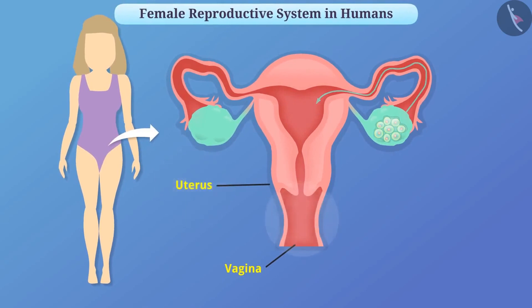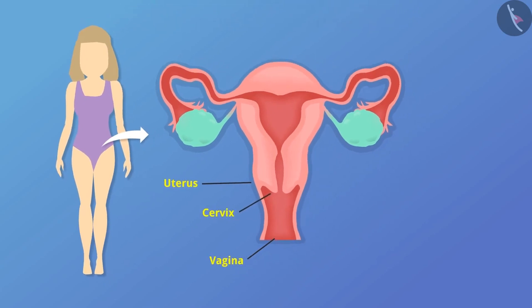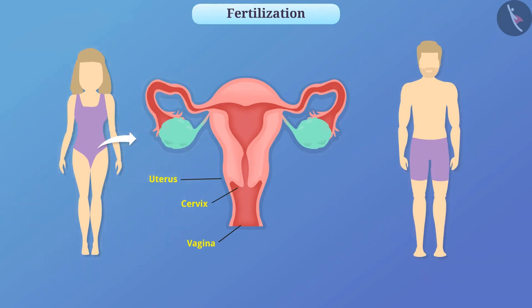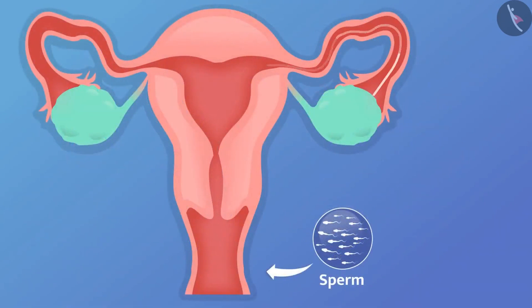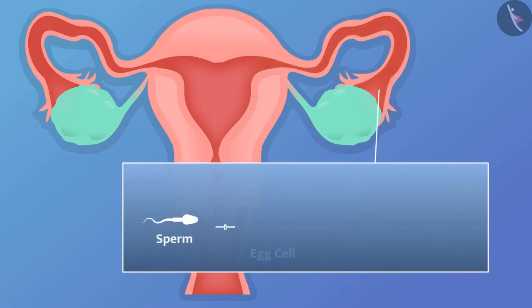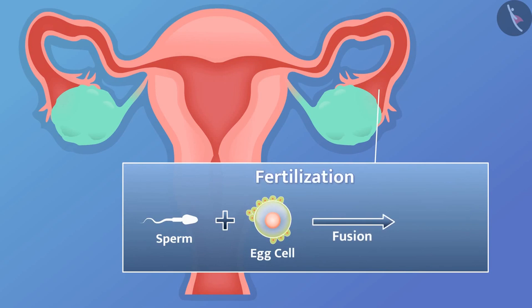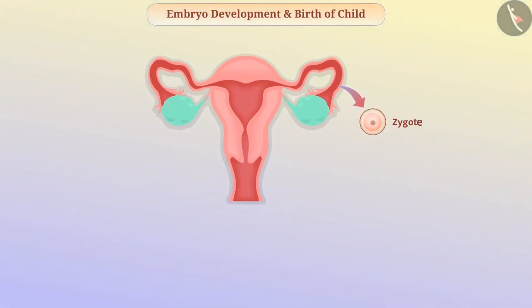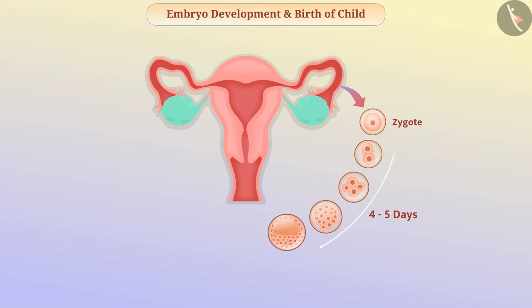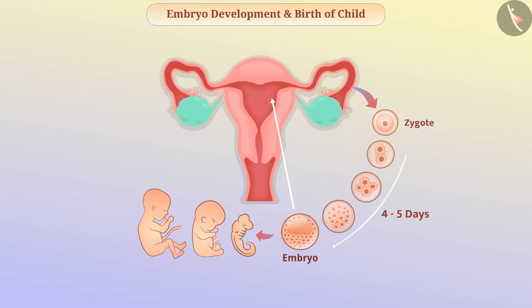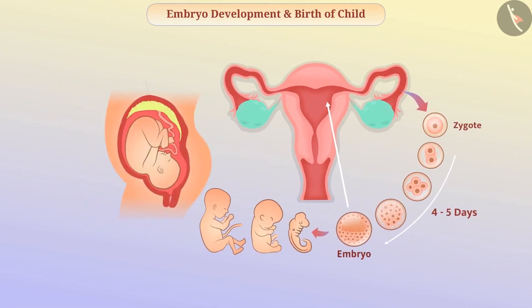The uterus and the vagina are attached to the cylinder-shaped cervix. At the time of sexual intercourse between human males and females, sperm are transported from the male's body to the vagina and reach the oviduct. In the fallopian tube, fusion of sperm and egg cell may occur — we call this fertilization — producing a fertilized egg called a zygote. The zygote divides several times and in 4 to 5 days forms a ball-like structure called an embryo. This embryo attaches to the uterine wall, where a disc-like structure called the placenta develops. The placenta is attached to the embryo by the umbilical cord.